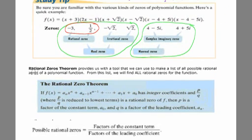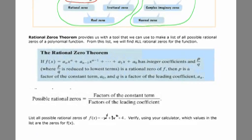It's going to be a tool that we can use to make a list of possible rational zeros. It's not going to just give us what the zeros are, it's going to be a list of possible zeros. And from that list, we have to determine which ones are actually our zeros.